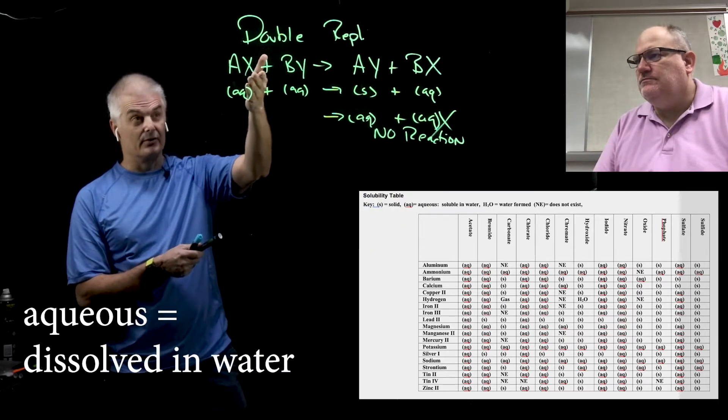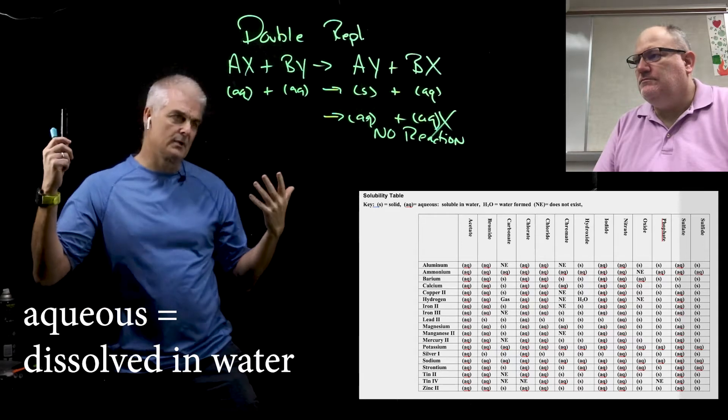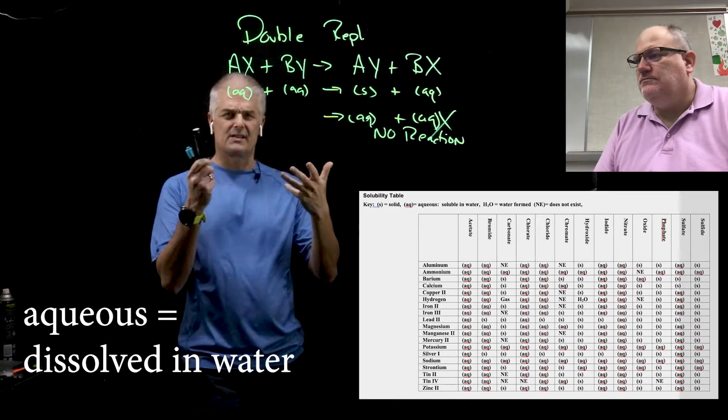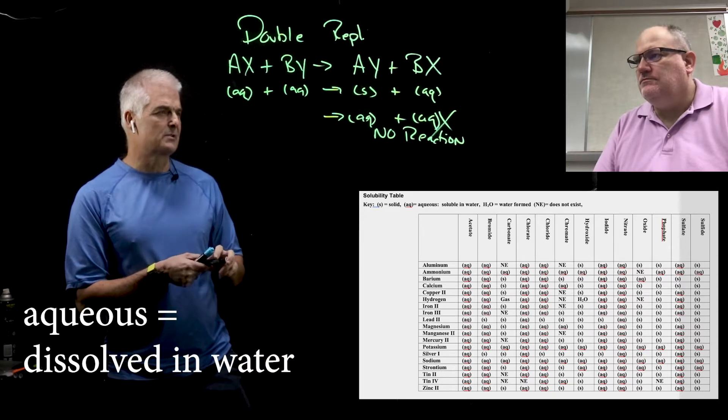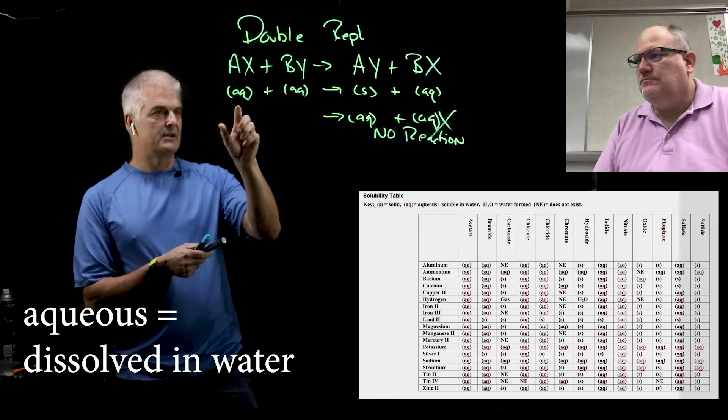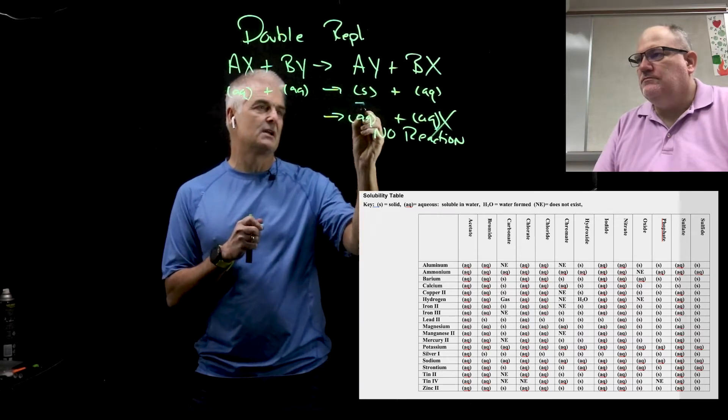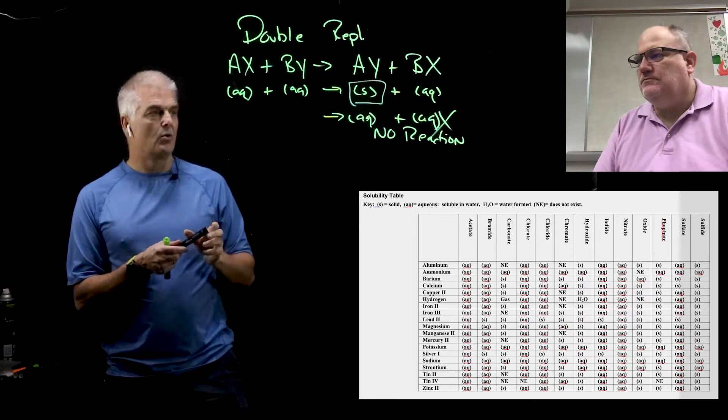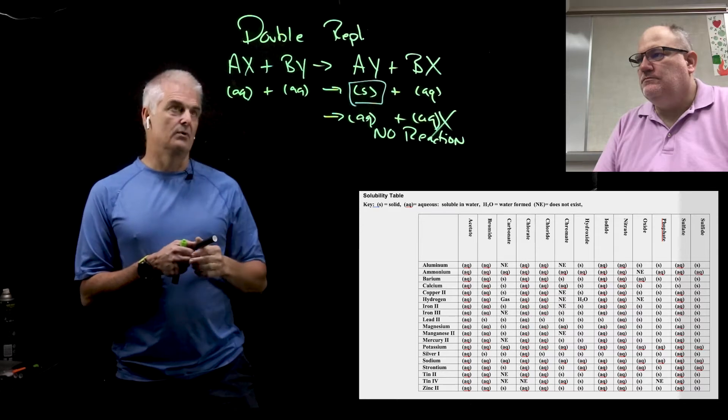Remind them again what aqueous is. Aqueous means dissolved in water, so you take the solid powder of AX, put it in water and it dissolves because it needs what we call a medium for it to actually separate the ions. Pre-AP students, you're going to learn more about why that is with something called ionic equations.